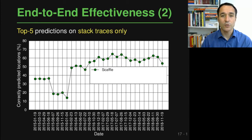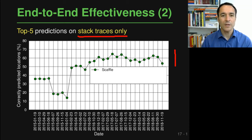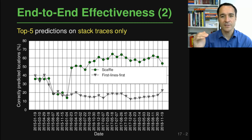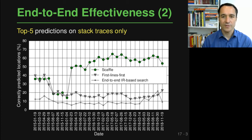In another experiment, we did not look at all the raw crash traces but extracted only the stack traces, because this is what a lot of prior work focuses on. Scaffle works pretty well even in this setting, reaching roughly 60% accuracy in predicting one of the right locations. We compared to a baseline called 'first lines first,' which assumes the most relevant lines in a stack trace are at the top — but this does not work well because the first lines are not always the most important. The end-to-end IR based search again does not work well, confirming the importance of first identifying the relevant lines.